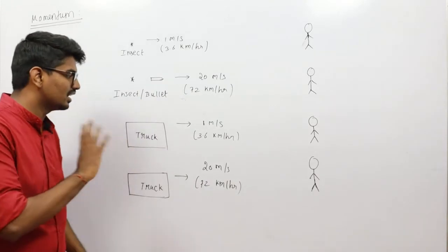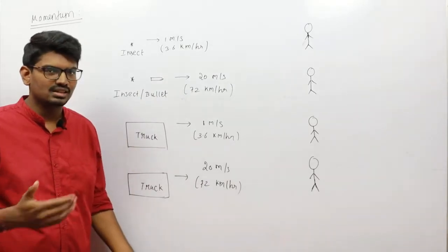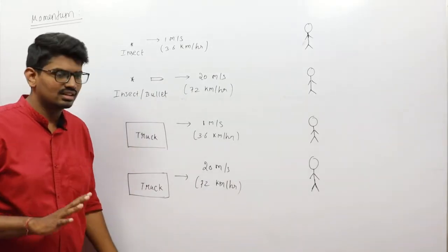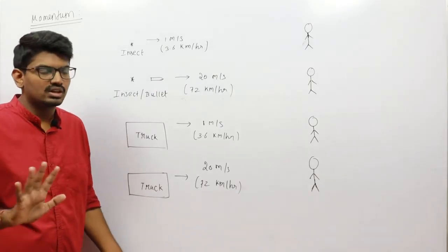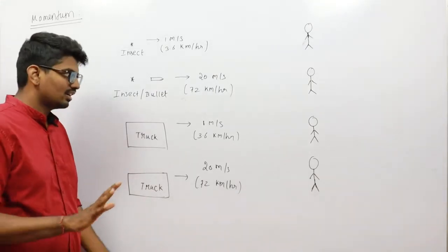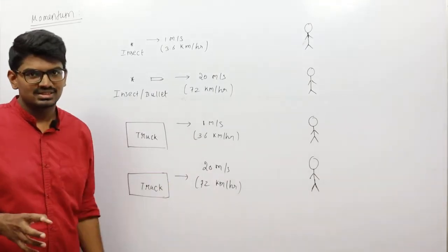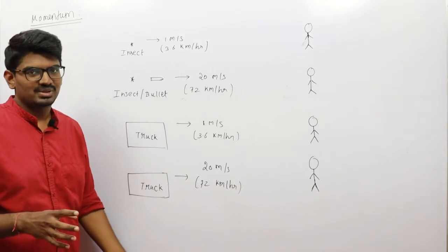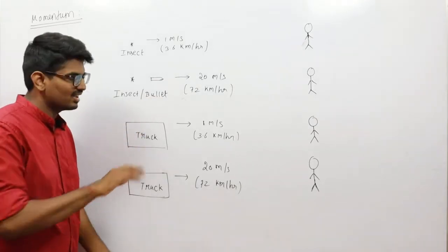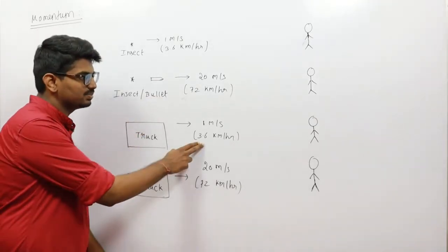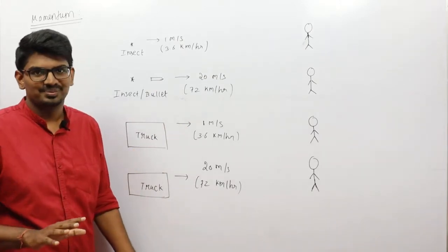Next, let's take a large truck — consider its weight to be around 110 tons — moving at just 1 meter per second, which is 3.6 kilometers per hour. A person is standing there and this truck moves at that speed and hits that person. What will happen?